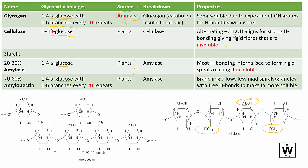The only other insoluble one is amylose, which is a single strand but made of alpha glucose. In that sense, cellulose and amylose are very similar — both insoluble. For amylose, the internal hydrogen bonding causes the chain to form rings or spirals.